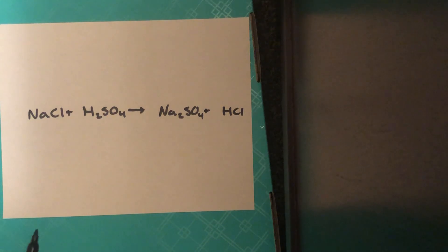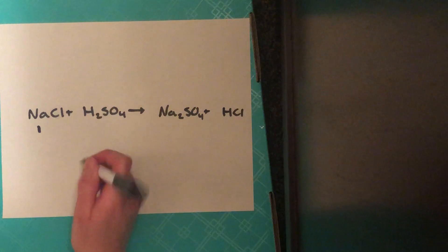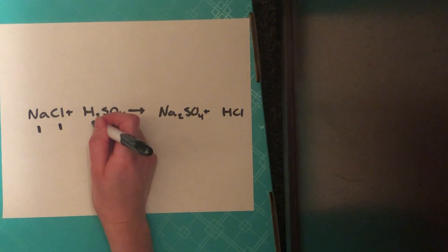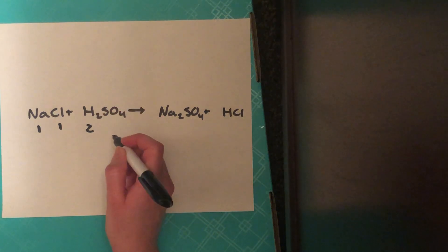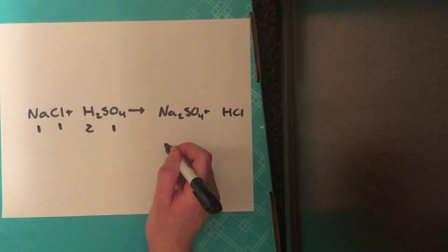First, we count out what we have. We have one sodium on the reactant side, one chlorine, two hydrogens (we know this from the subscript right here). We're going to leave sulfate or SO4 as one entity since it's a polyatomic ion, so we'll leave that as one.